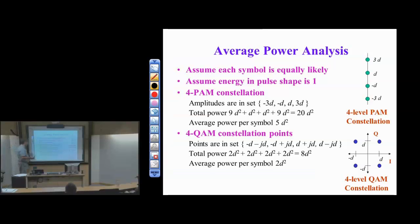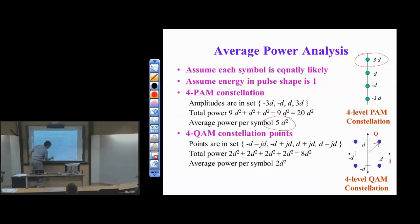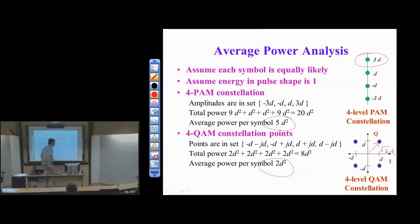For power comparison: 4-PAM has peak power 9D² and average power 5D², while 4QAM has peak power 2D² and average power 2D² — a dramatic reduction. For the same transmit power, D can be made larger in the QAM case, reducing symbol error probability significantly. This is a major advantage of QAM over PAM.